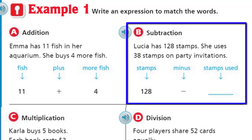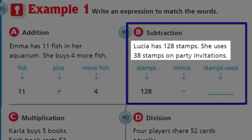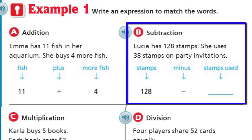For B, we have subtraction. Lucia has 128 stamps. She uses 38 stamps on party invitations, so she used some of those stamps. Therefore they're no longer going to be part of that group of 128. We're going to subtract. The expression is 128 minus 38. Again, we're not looking for an answer. We're not asked to evaluate. We're just simply asked to write an expression to match these words.